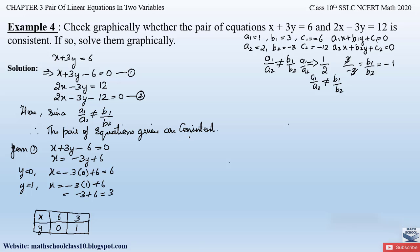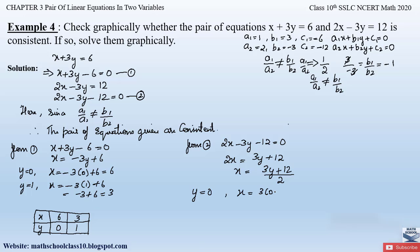For Equation 2, 2x − 3y − 12 = 0, we get x = (3y + 12)/2. Substituting y = 0 gives x = 12/2 = 6. Substituting y = 1 gives x = (3 + 12)/2 = 15/2.